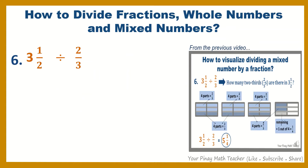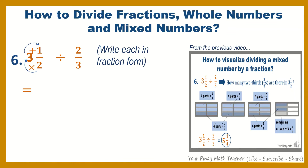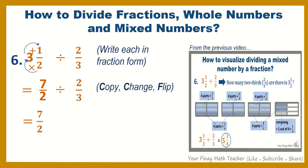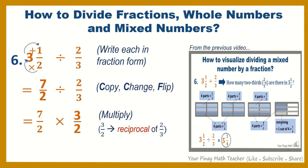Number 6: 3 and 1 half divided by 2 thirds. Write each in fraction form. 3 and 1 half is equivalent to 7 over 2 — 3 times 2 is 6, plus 1 is 7 — divided by 2 thirds. Then copy, change, flip: copy 7 halves, times 3 halves, which is the flip fraction of 2 thirds. Then multiply. 3 halves is the reciprocal of 2 thirds.